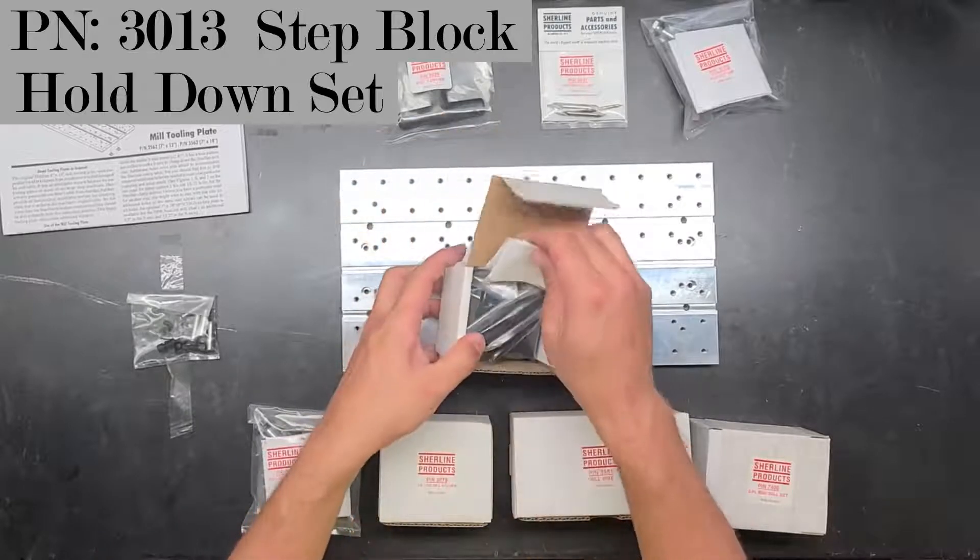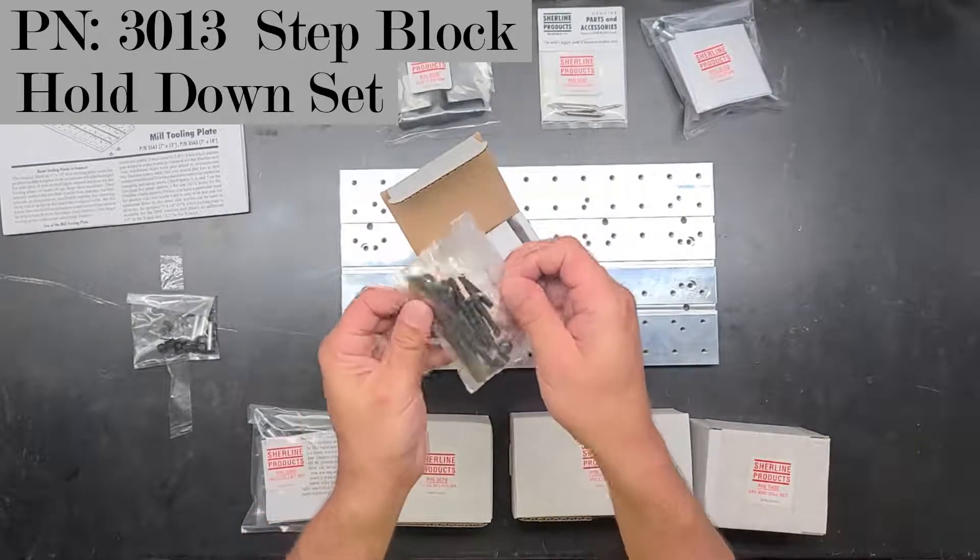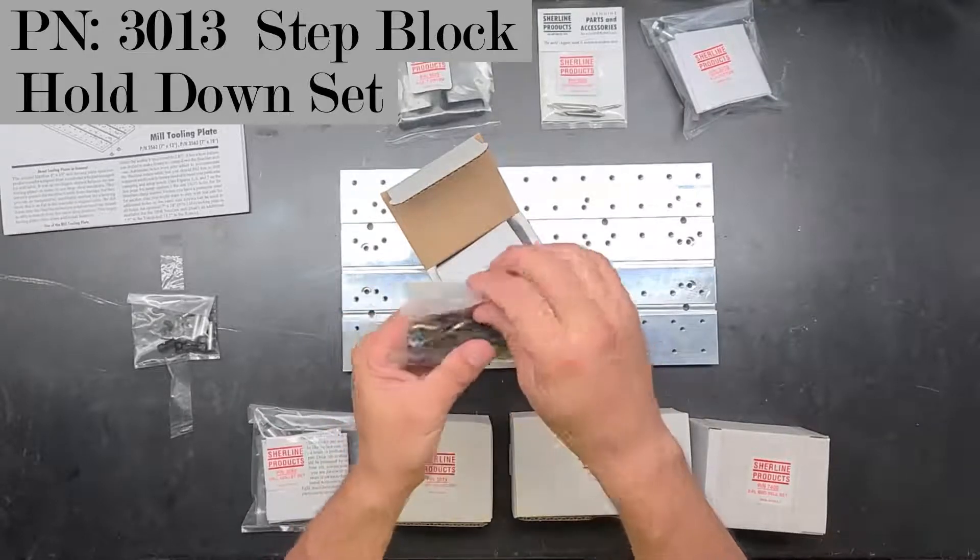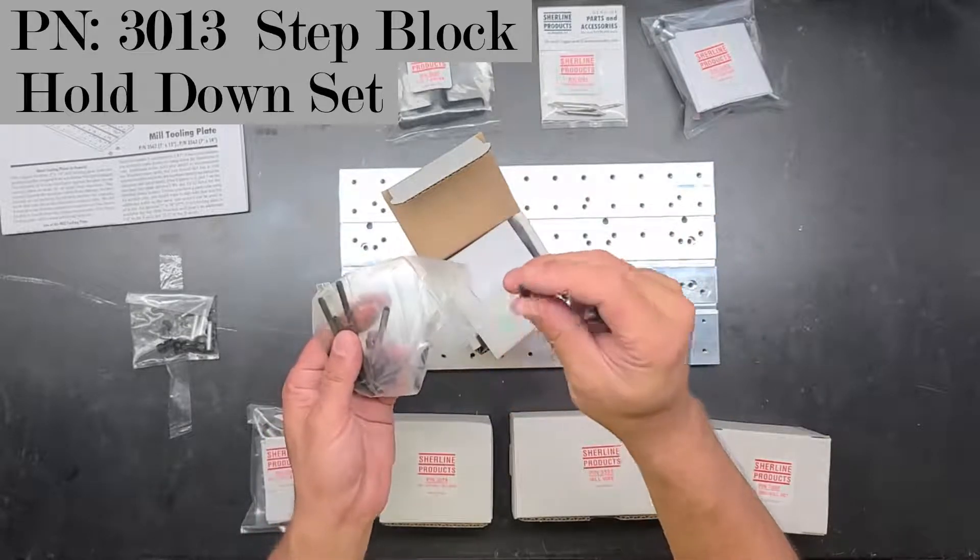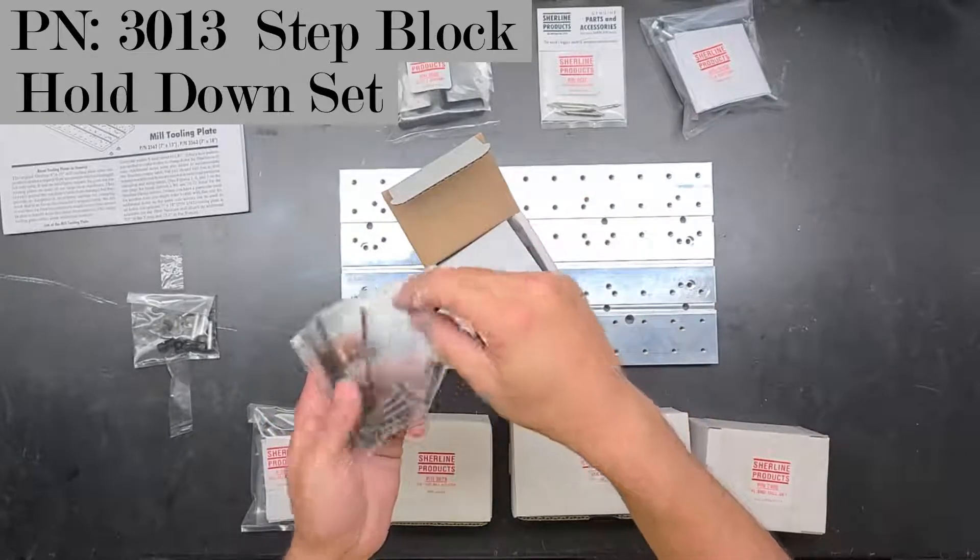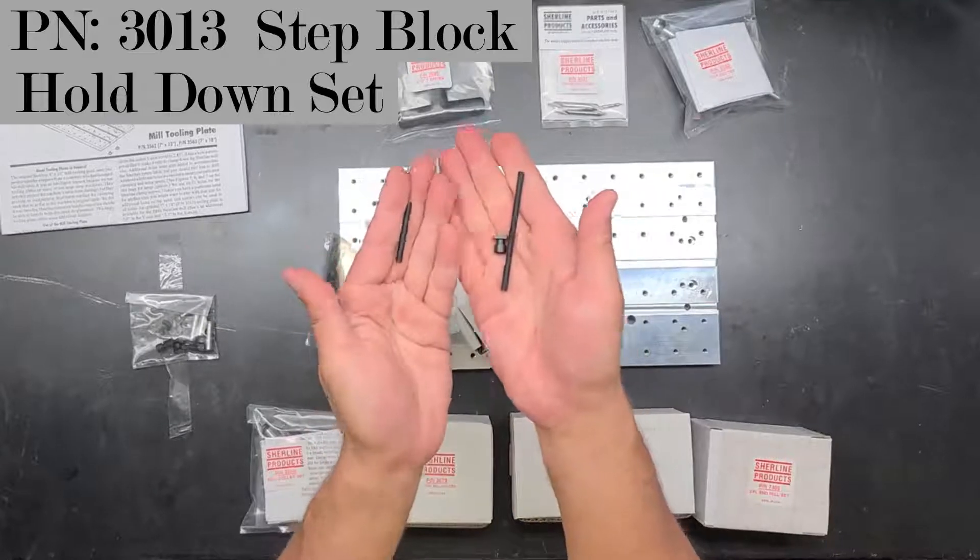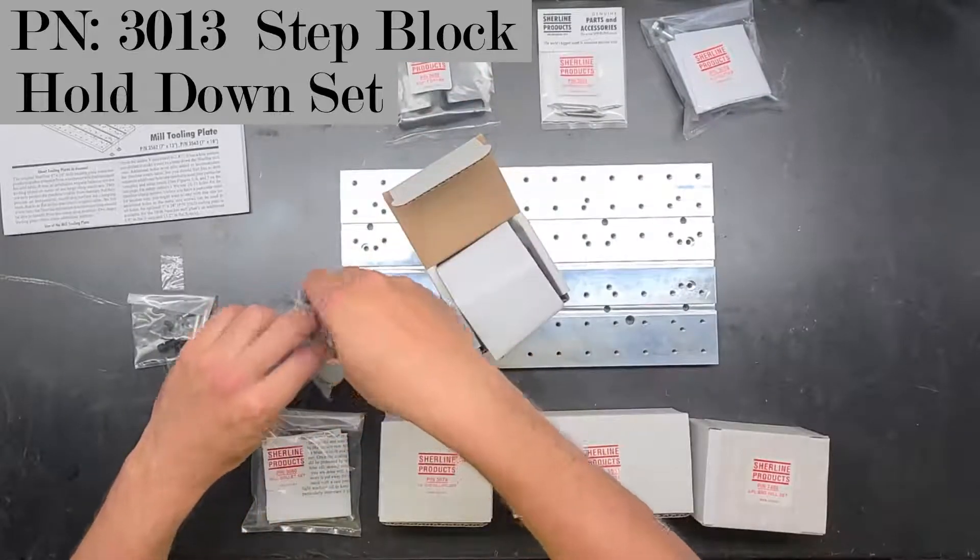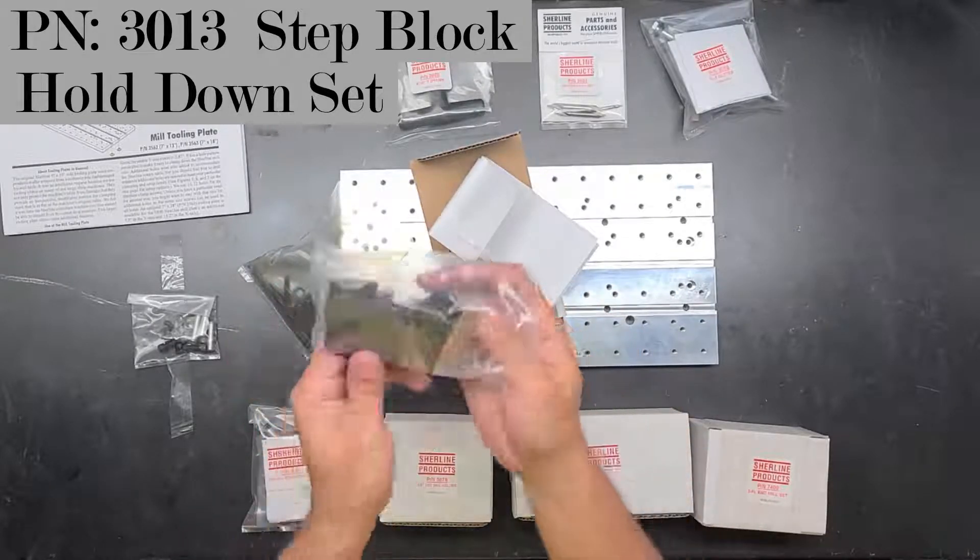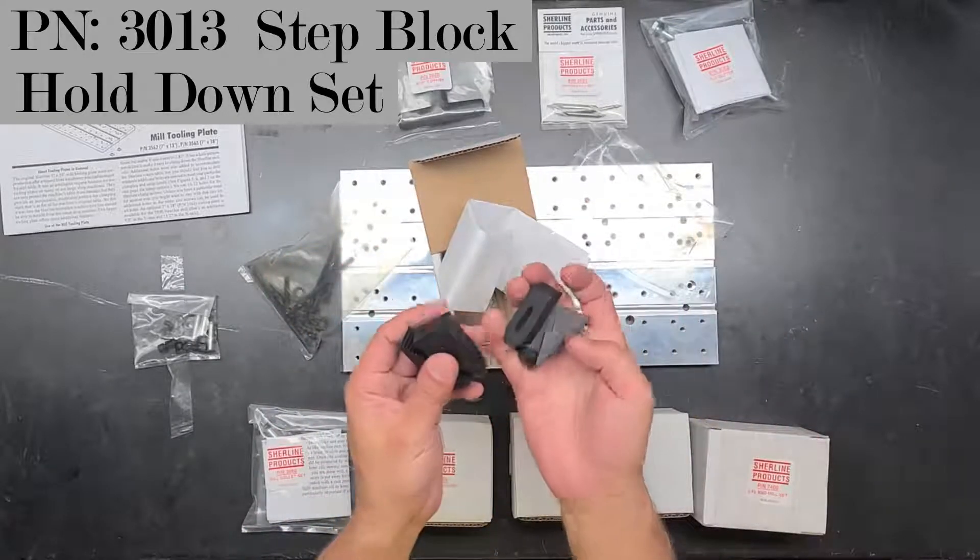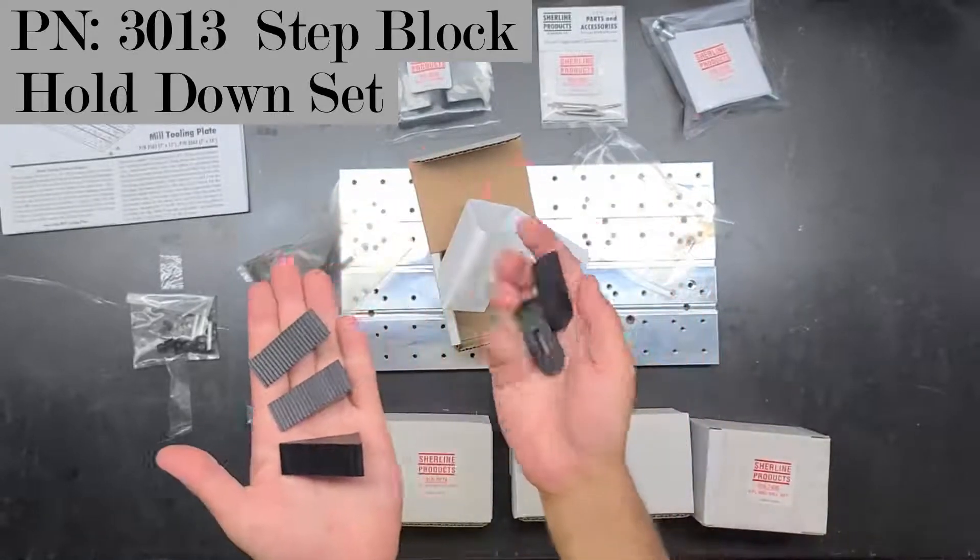And a nice box, so I know there's a set of instructions here. Got a couple little baggies, so some all-thread and some T-nuts in here. Yeah some all-thread, this chamfered washer, some T-nuts. Oh there's a couple different lengths of this all-thread. And then a set of step lock hold-downs.